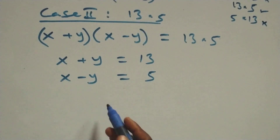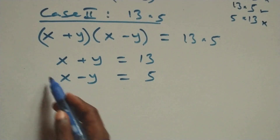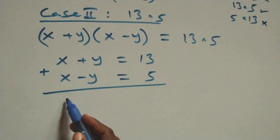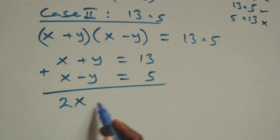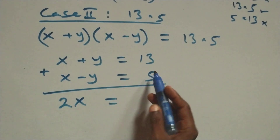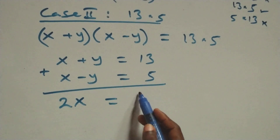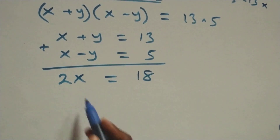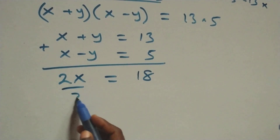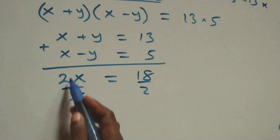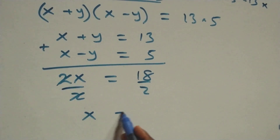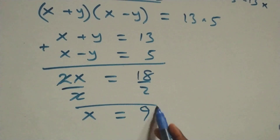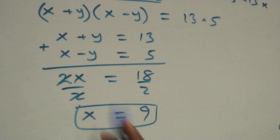Solving these two equations simultaneously, we add to eliminate y: x plus x gives 2x, which equals 13 plus 5, that's 18. Dividing both sides by 2, we get x equals 18 over 2, which is 9.